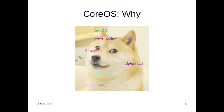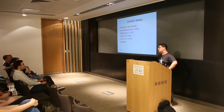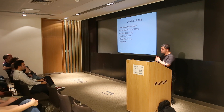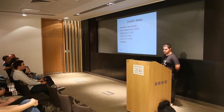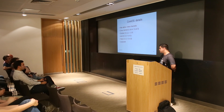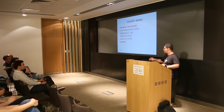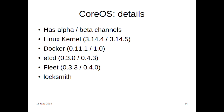Some details: CoreOS has a couple of channels — right now just an alpha and a beta channel. The alpha channel is cut on a fortnightly basis, and the beta on a monthly basis, so it's fairly frequent releases. They're aiming to have a production channel later in the year. CoreOS is all free software but is backed by a commercial venture company, so if you want early access you can pay as well. Note that I've accidentally flipped the alpha and beta version numbers in my slides — where it says Docker 1.0, that's actually in the alpha channel.